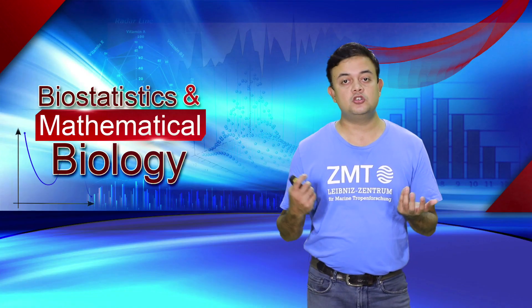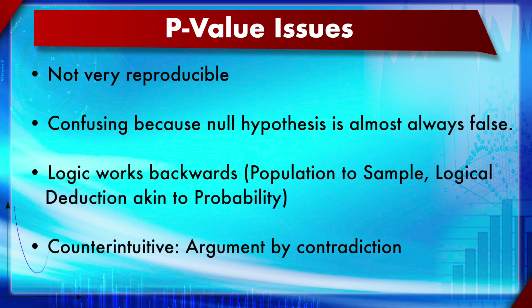There are several issues with the p-value. First, it is not very reproducible — if you get one p-value and redo the same experiment, the p-value obtained may not match, so you cannot infer a meaningful conclusion. It is also confusing because the null hypothesis is almost always false, leading many to ask why this roundabout approach is needed. The logic works backwards from population to sample — it is deductive logic, an argument by contradiction, which is counterintuitive and not intuitive for most scientists, especially biologists.